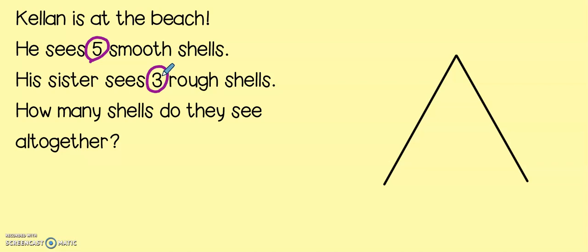So, I see Kellen and his sister. Kellen sees five shells. His sister sees three shells. And we want to find out how many they see all together. Now, I see the word together. Do you see the word together? Do you see that part in all together?